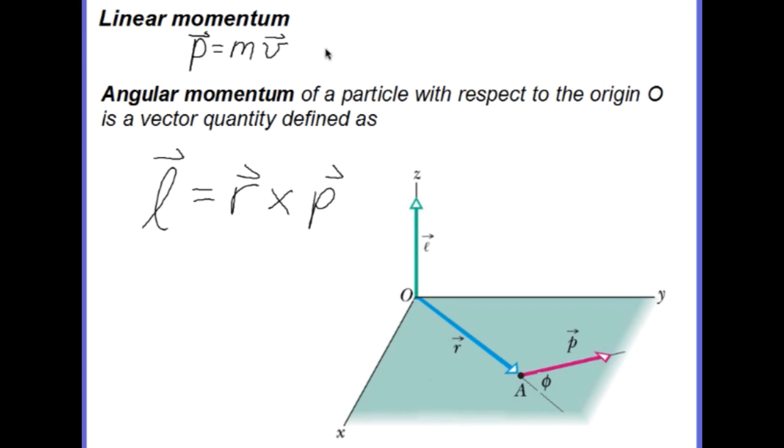Our figure shows a particle of mass M with linear momentum P as it passes through point A in the xy-plane. The angular momentum L of this particle with respect to the origin O is a vector quantity defined as R cross P, where R is the position vector of the particle with respect to O.